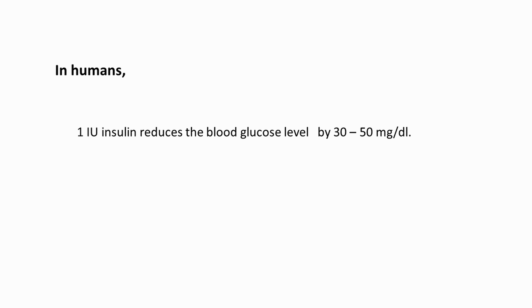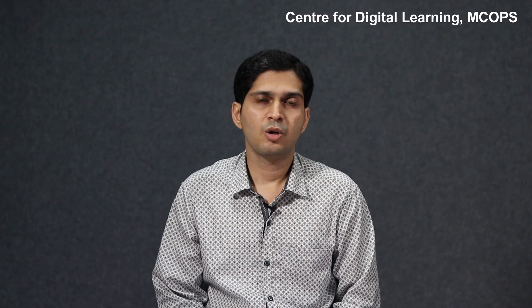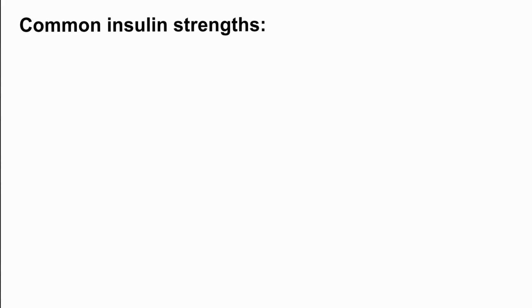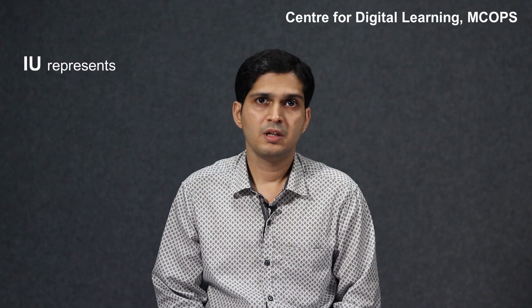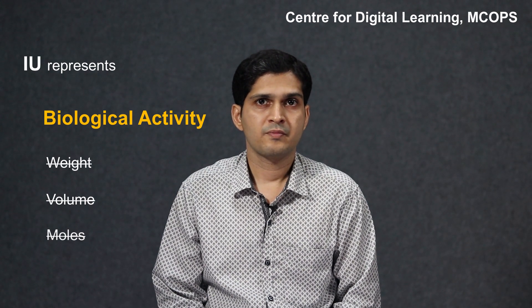In humans, administration of one unit of insulin decreases the blood glucose level by approximately 50 milligrams per deciliter. It is known that approximately 34.7 micrograms of pure crystalline human insulin is equivalent to one international unit. All insulin preparations come dissolved or suspended in liquids. The commonly available strengths are U100 (100 units per ml), U40 (40 units per ml), and U500. Whenever you come across the term international unit to express drug dose, remember that the unit is related to biological activity of the drug and not its quantity.